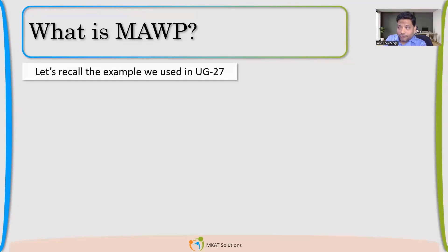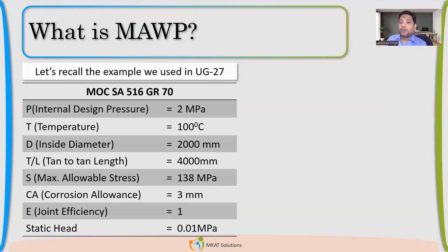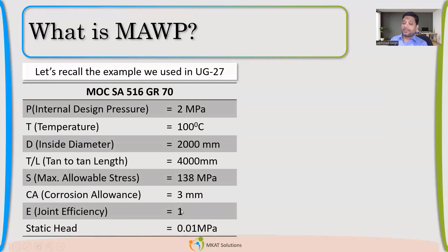Let us start from where and how we calculate MAWP — very basic. Just recall: if we have a design pressure of 2 MPa, temperature 100°C, inside diameter 2000 mm, tan-to-tan length 4000 mm, allowable stress 138 MPa, corrosion allowance 3 mm, joint efficiency 1, and a static head of 0.01 MPa.